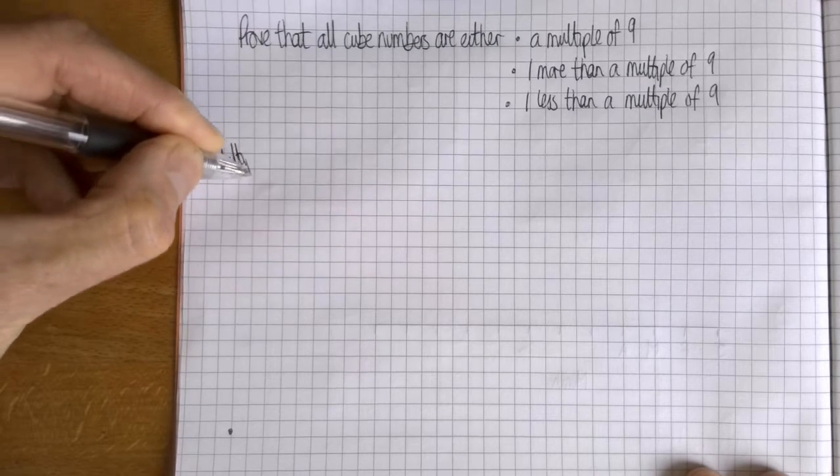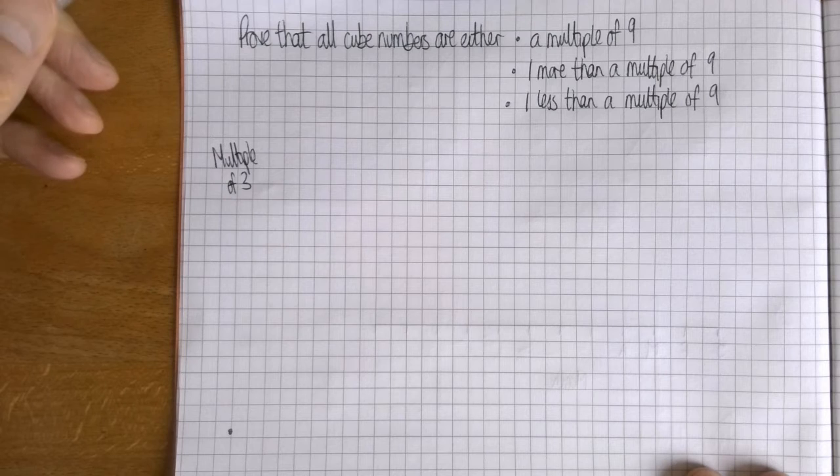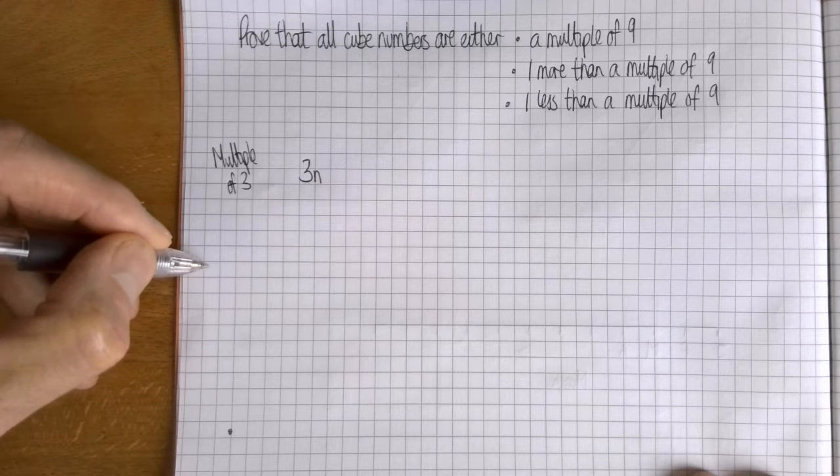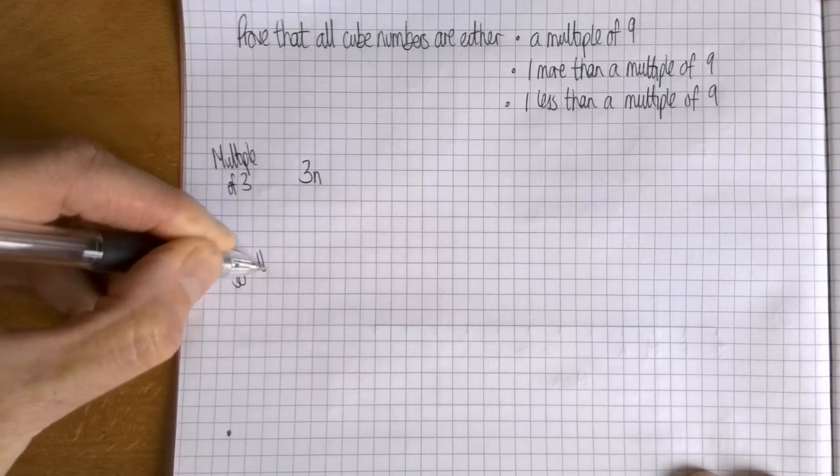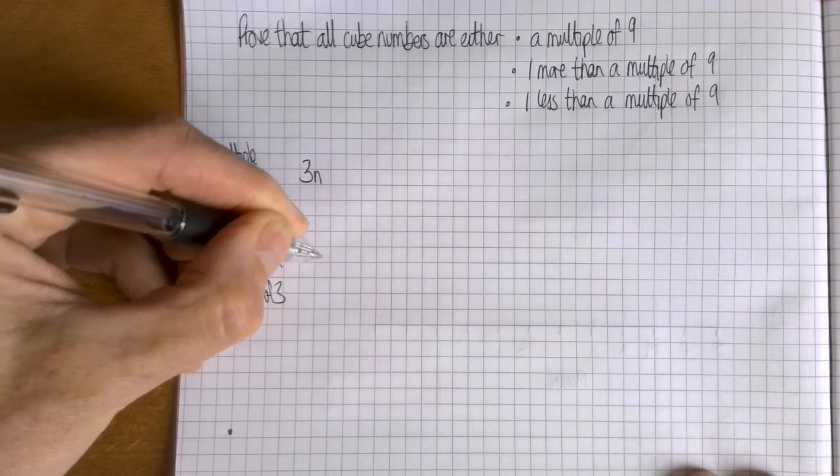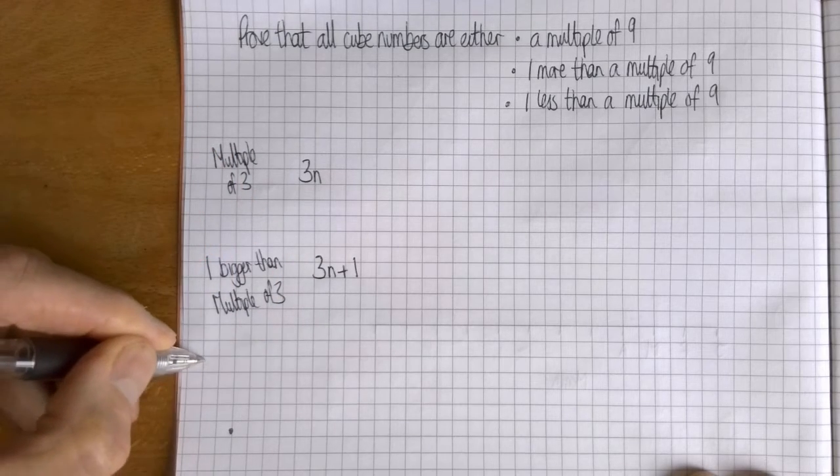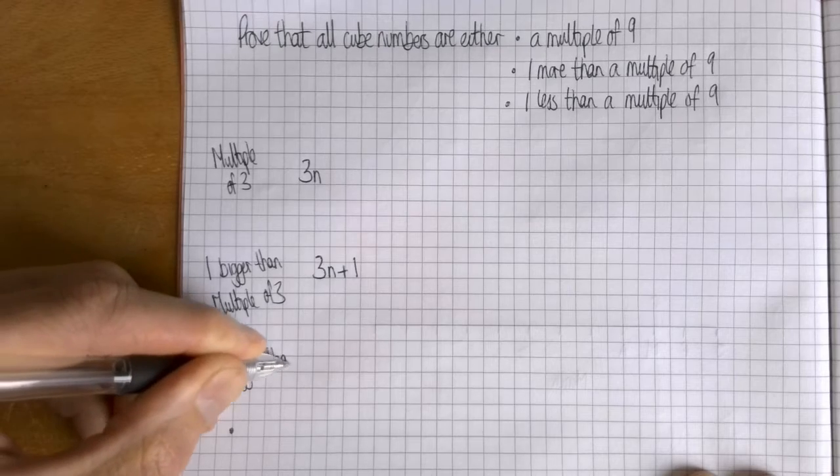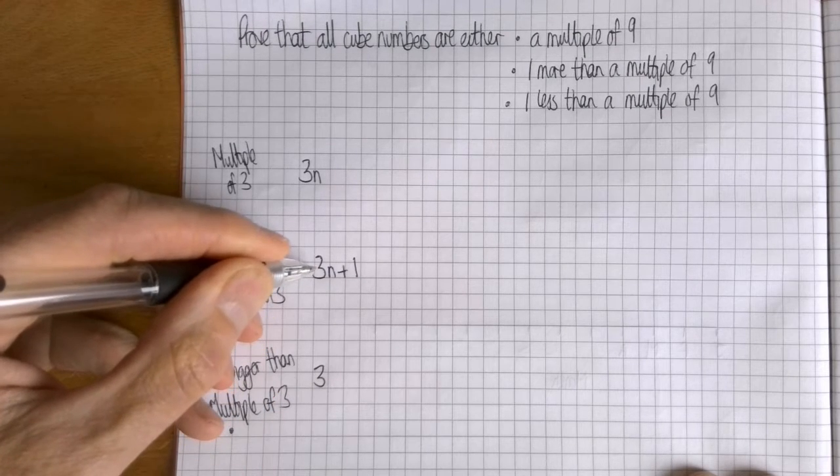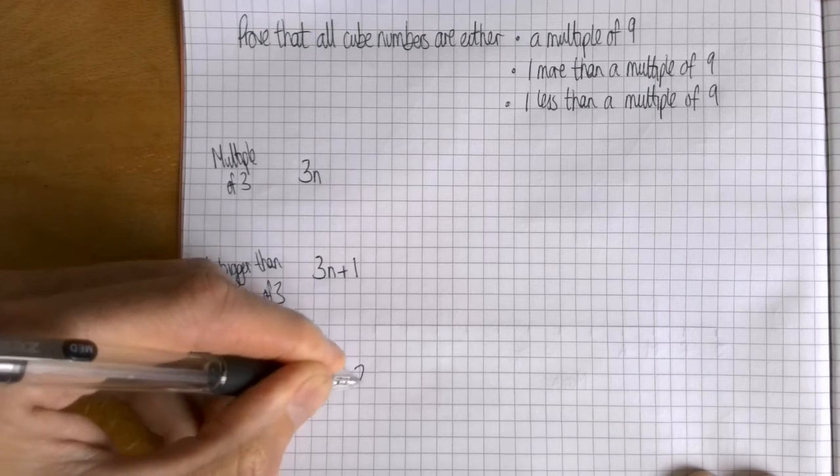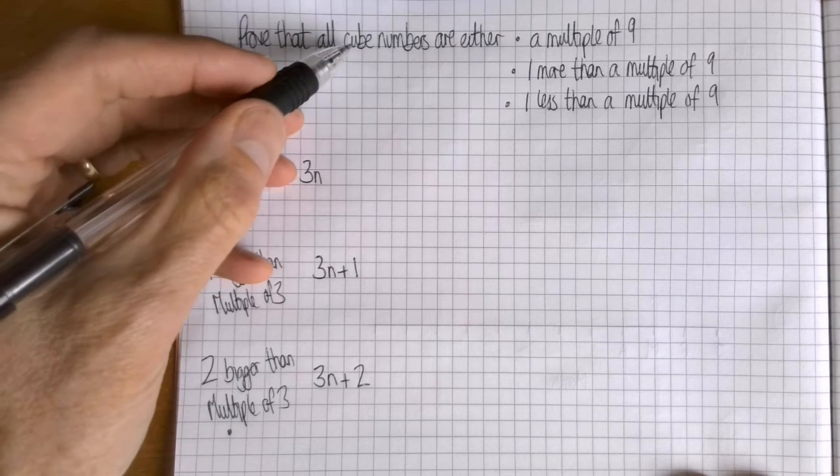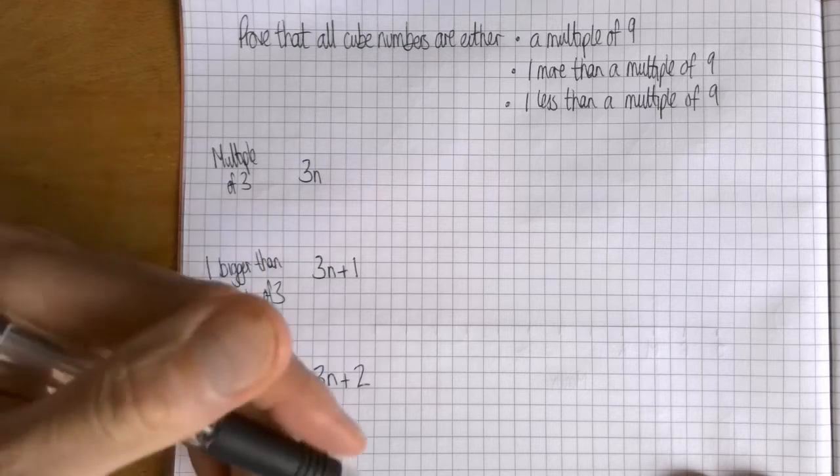And it was all about multiples of three. So you have to consider the three options are: consider a multiple of three, so that would be 3n and that's how we describe a multiple of three going back to good old GCSE proof. You've then got one bigger than a multiple of three, so that would be 3n plus one, and then two bigger than a multiple of three.